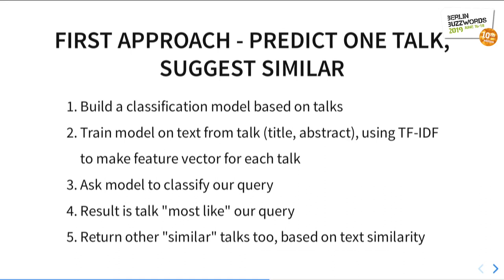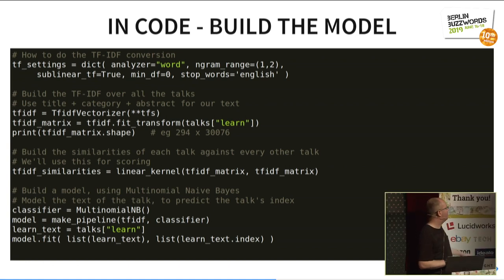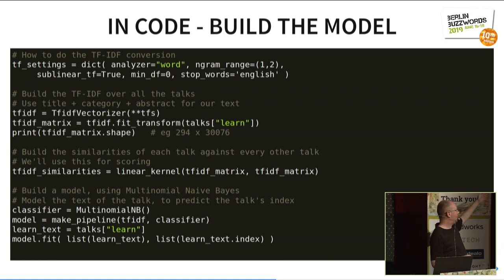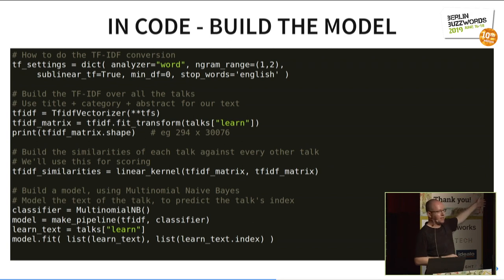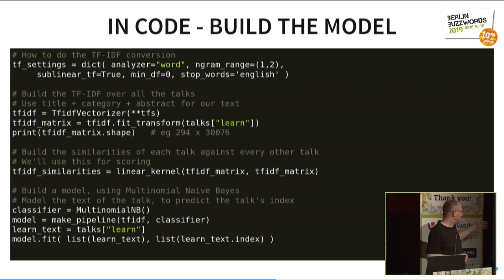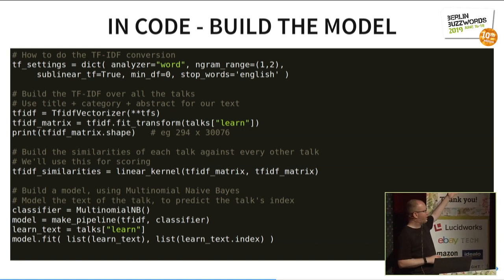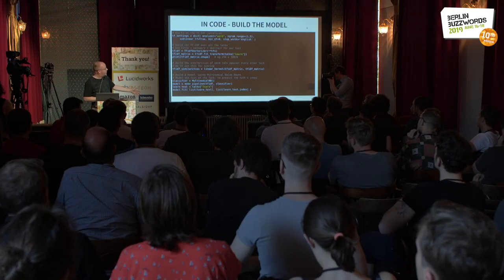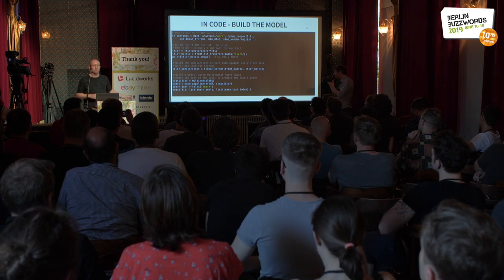So, first little bit of AI: we're going to build a classification model for our talks, feed in the title and abstract, chuck it through TF-IDF, then ask our model to classify our query, cluster it, and say which talk is most like our query. In code, we build up our TF-IDF vector — I've got 294 talks, which came out as 30,000 different terms — calculate the similarity between each talk, use multinomial naive Bayes, a really simple but quite powerful AI framework, and build a model. This probably would have taken a man-year or two in the 1980s; we've done it in less than 10 lines of Python. It is wonderful living in the future.